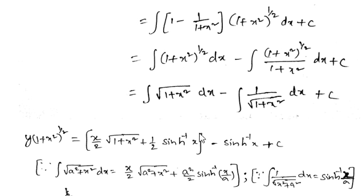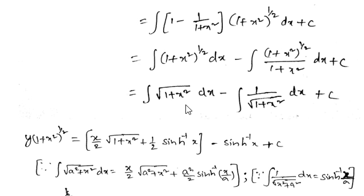For ∫√(1 + x²) dx, the answer is (x/2)√(1 + x²) + (1/2)·sinh⁻¹(x). Using the formula ∫√(a² + x²) dx = (x/2)√(a² + x²) + (a²/2)·sinh⁻¹(x/a), where here a = 1, we get (x/2)√(1 + x²) + (1/2)·sinh⁻¹(x).